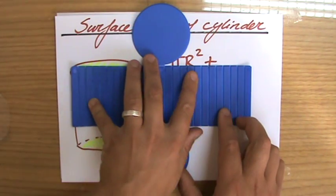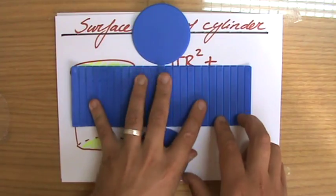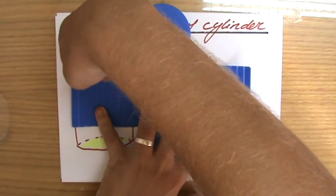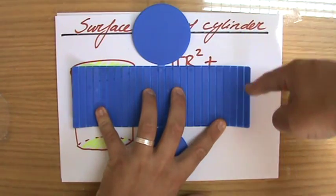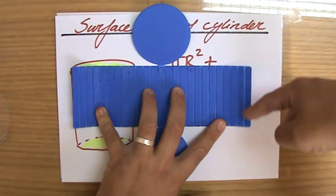It's a rectangle. And how do you find the area of a rectangle? Well, that would be length times width, or if you like, base times height.